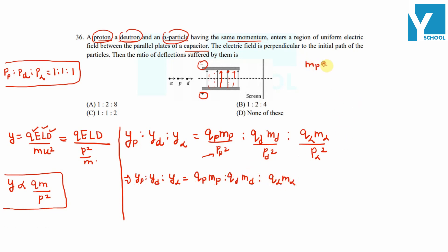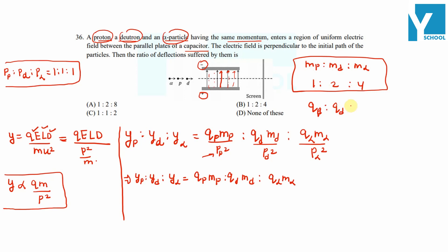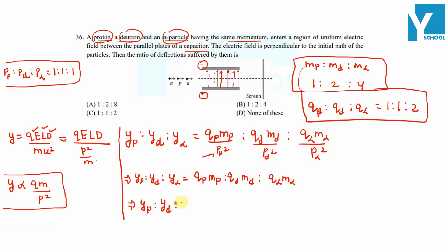We know the mass ratio of proton : deuteron : alpha particle is 1 : 2 : 4, and the charge ratio Q_p : Q_d : Q_α is 1 : 1 : 2. Multiplying these quantities together: y_proton : y_deuteron : y_alpha = (1×1) : (1×2) : (2×4) = 1 : 2 : 8. So option A, which gives 1 : 2 : 8, is the correct answer.